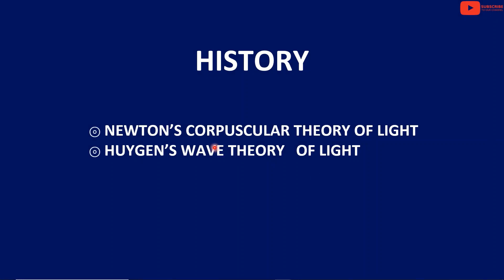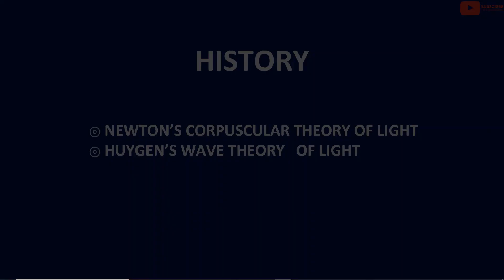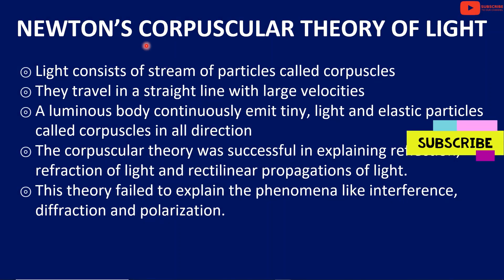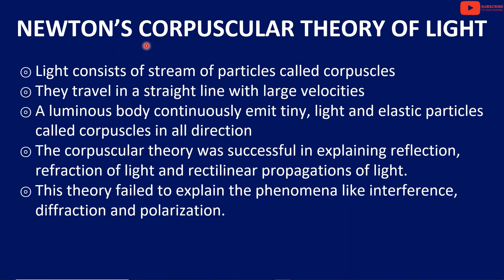First, Newton's corpuscular theory of light. Second, Christian Huygens' wave theory of light. Newton's corpuscular theory of light states that light has a particle nature. Light consists of a stream of particles called corpuscles. That particle is called a corpuscle.